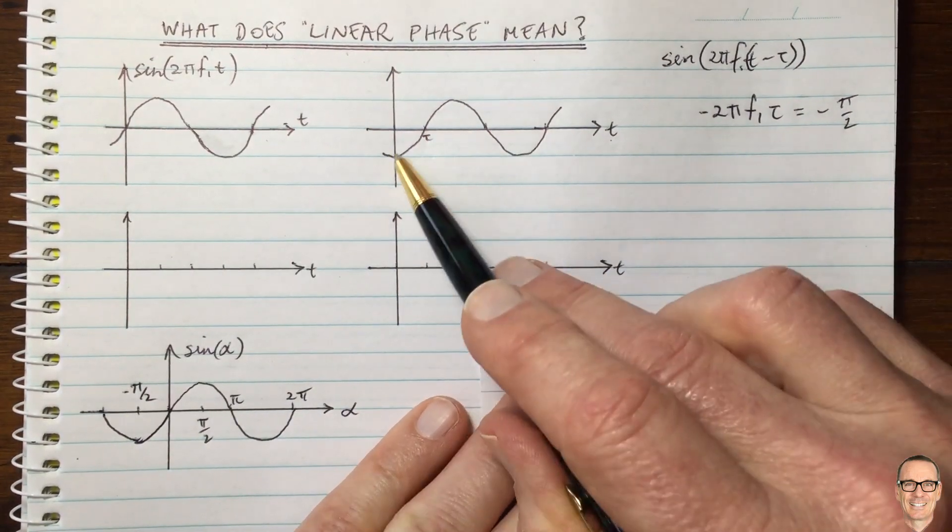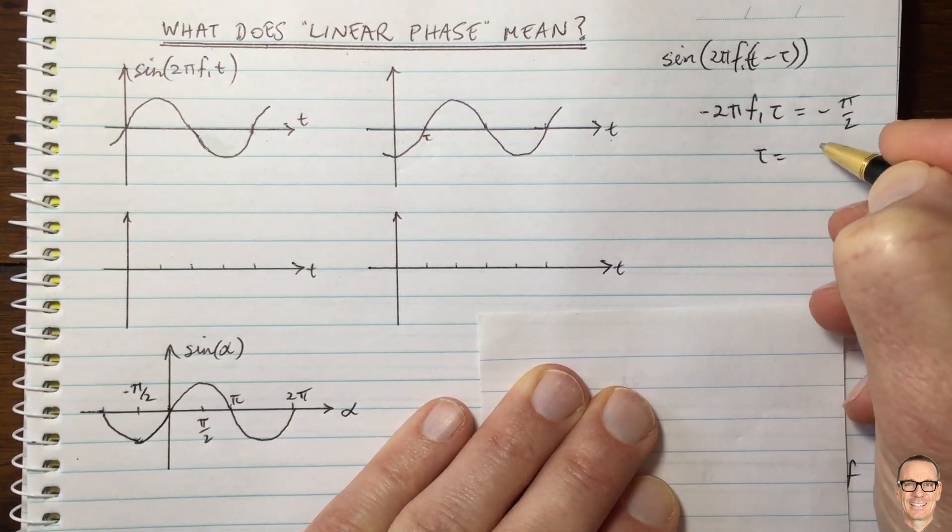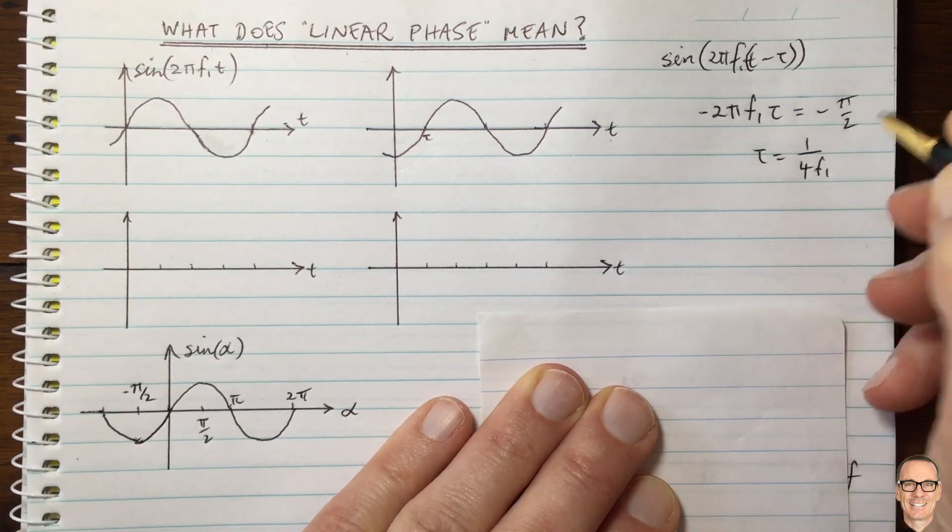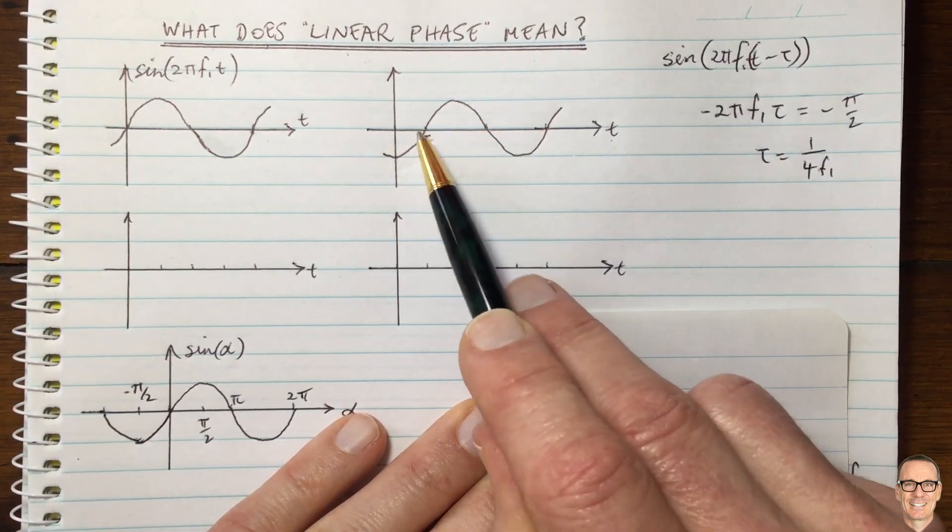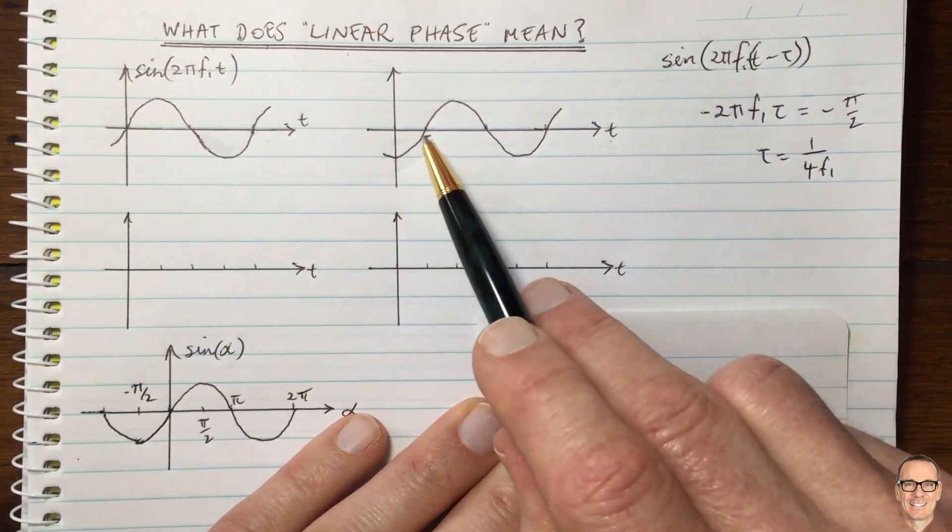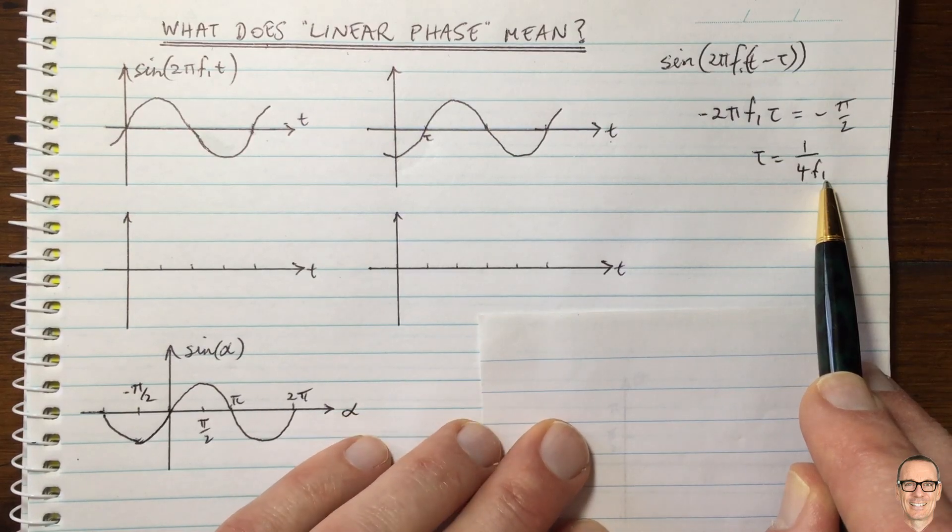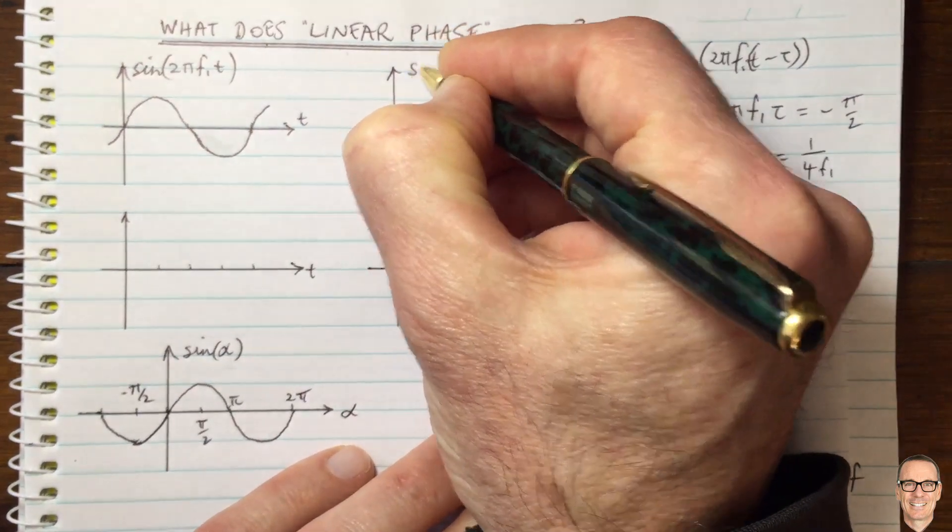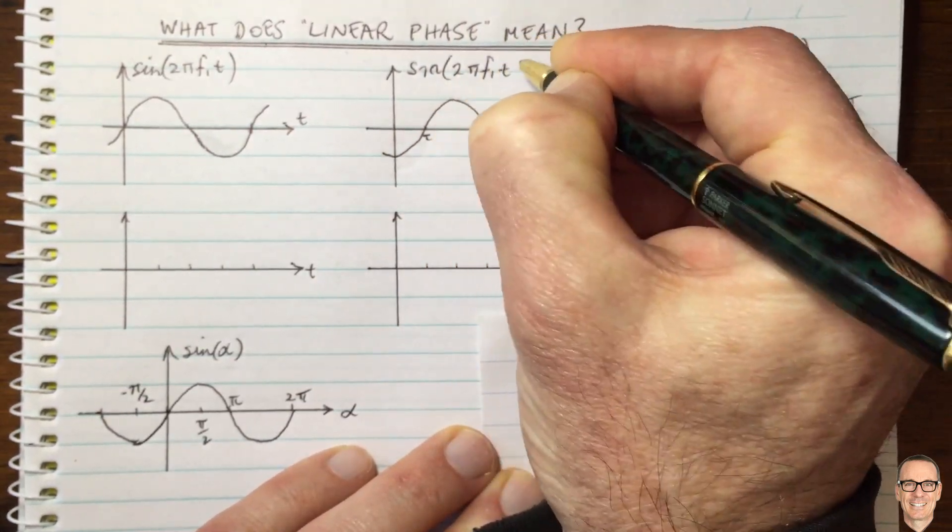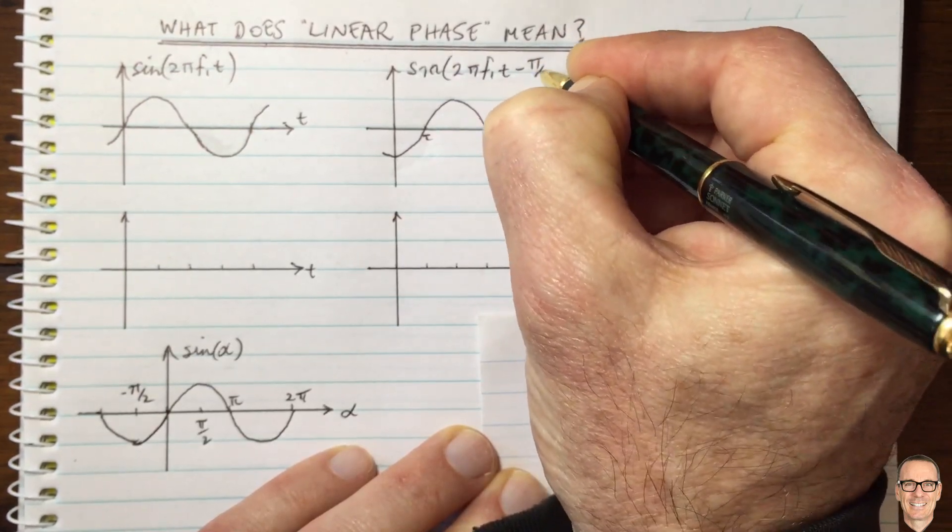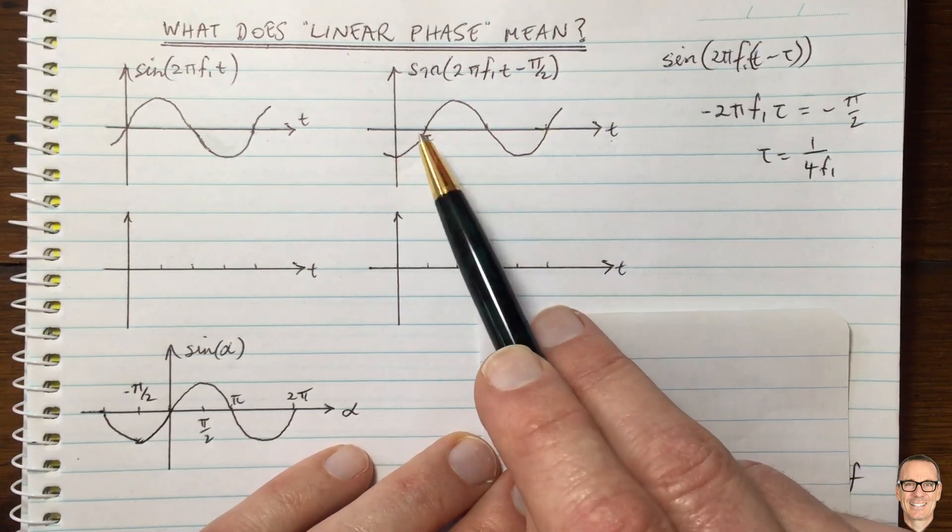So now we can work out that for the delay that I've drawn here, we have TOR equals 1 divided by 4 f1. So for the delay that I have drawn here, where the delay is exactly one quarter of a period, we have the value TOR, the actual time delay is 1 divided by 4 f1. We've calculated that. So that means we can write our expression here, sine of 2 pi f1 T minus pi divided by 2. Okay, so that's our equation for this function here, when we delayed by that value of TOR.